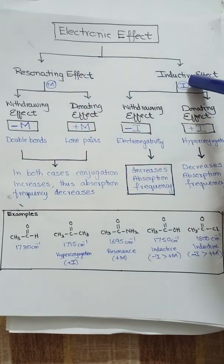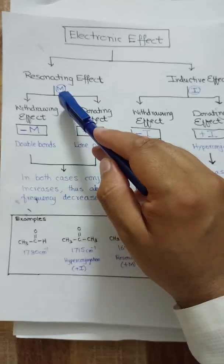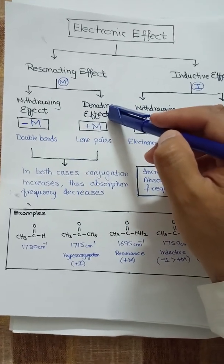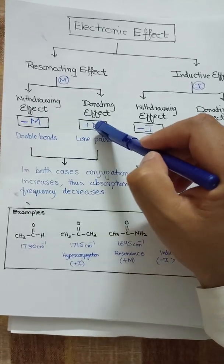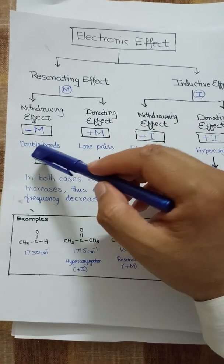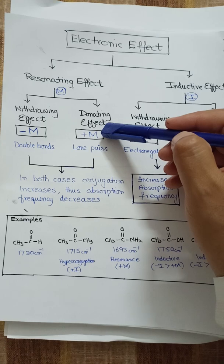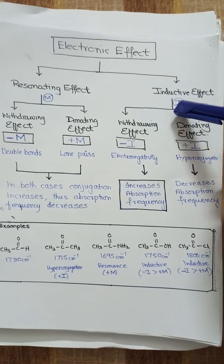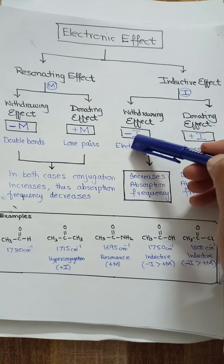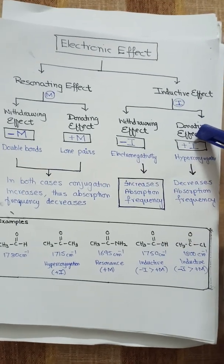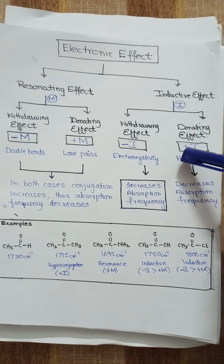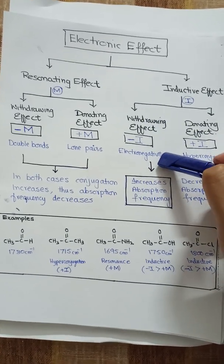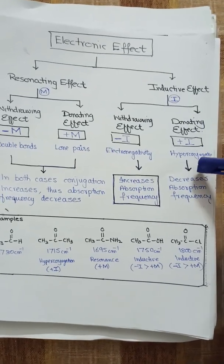There are two types of electronic effects: the resonating effect and the inductive effect. The resonating effect can be a resonating withdrawing effect or an electron donating effect, represented as -M or +M. The electron withdrawing effect is due to double bonds, and the electron donating effect occurs due to lone pairs. For the inductive effect, there is an electron withdrawing inductive effect represented as -I, and an electron donating inductive effect represented as +I.